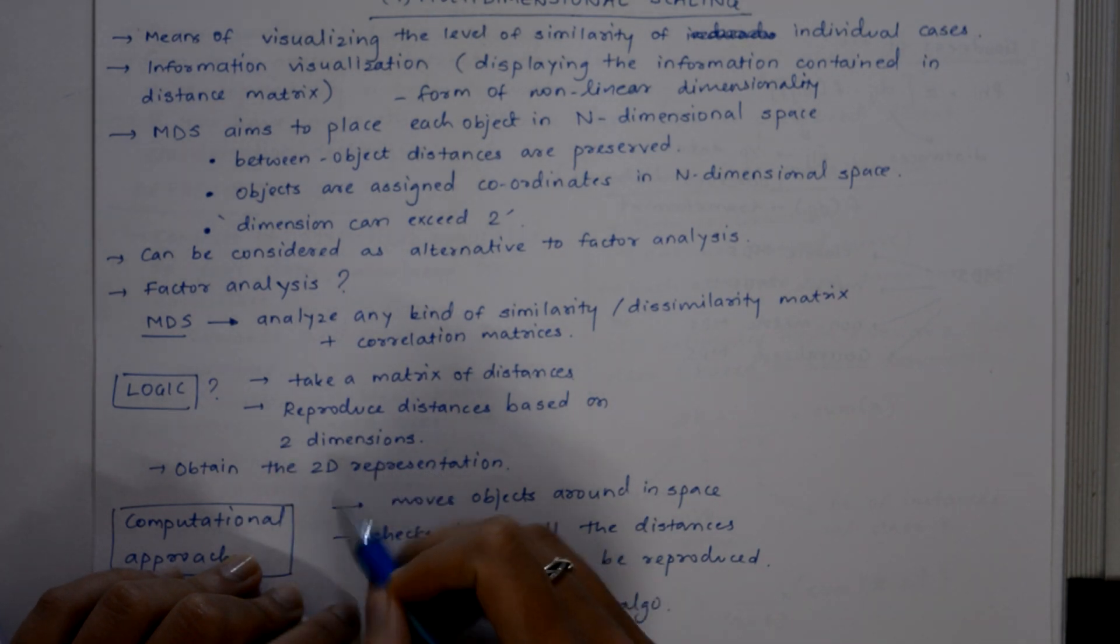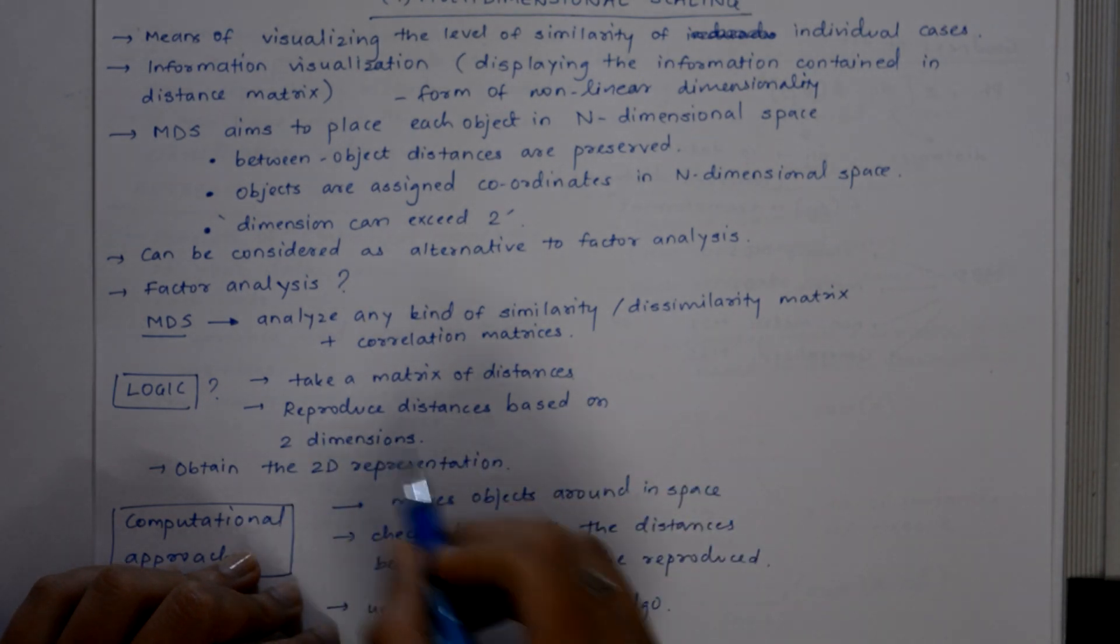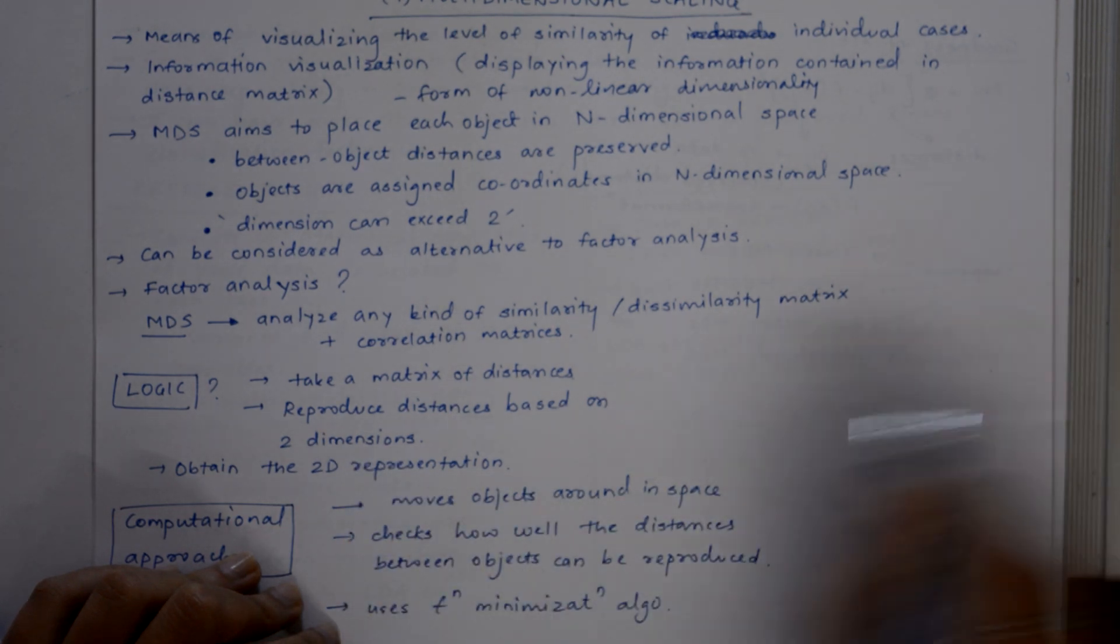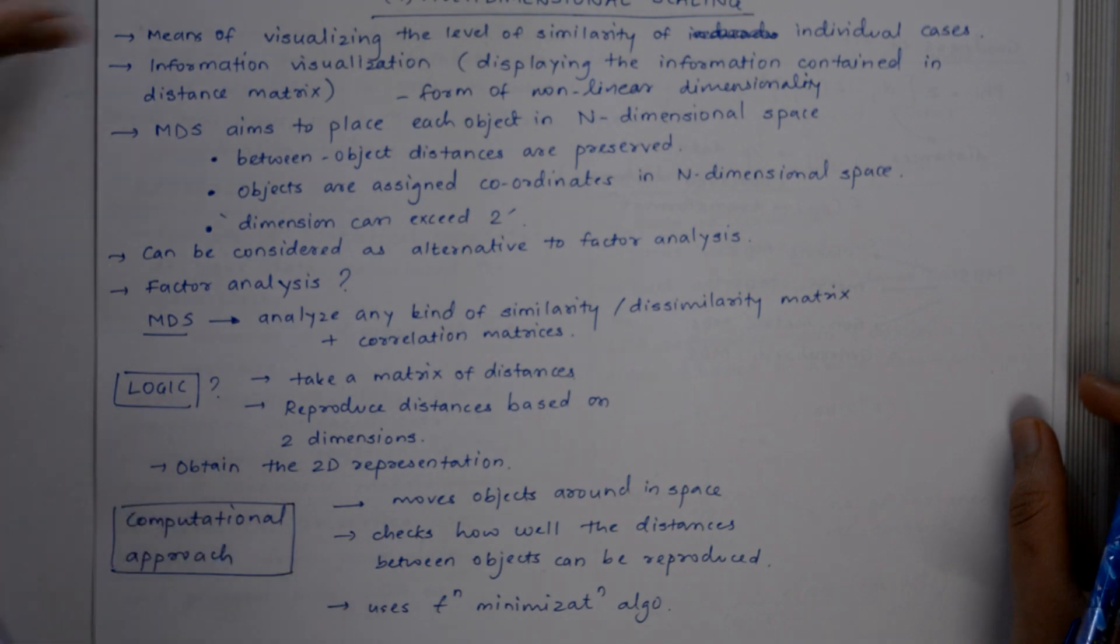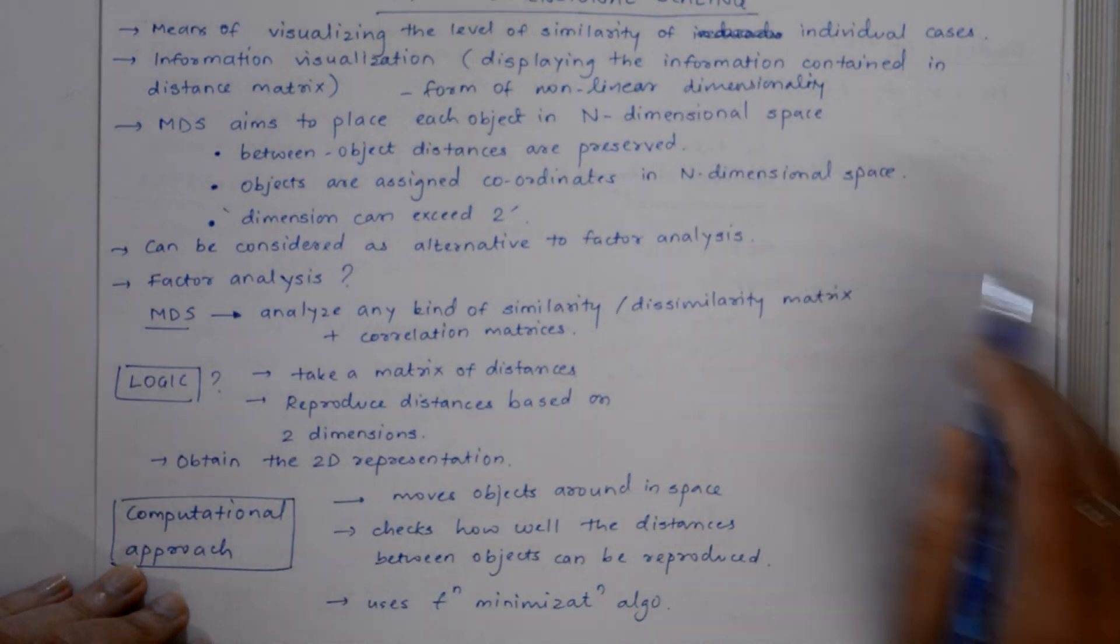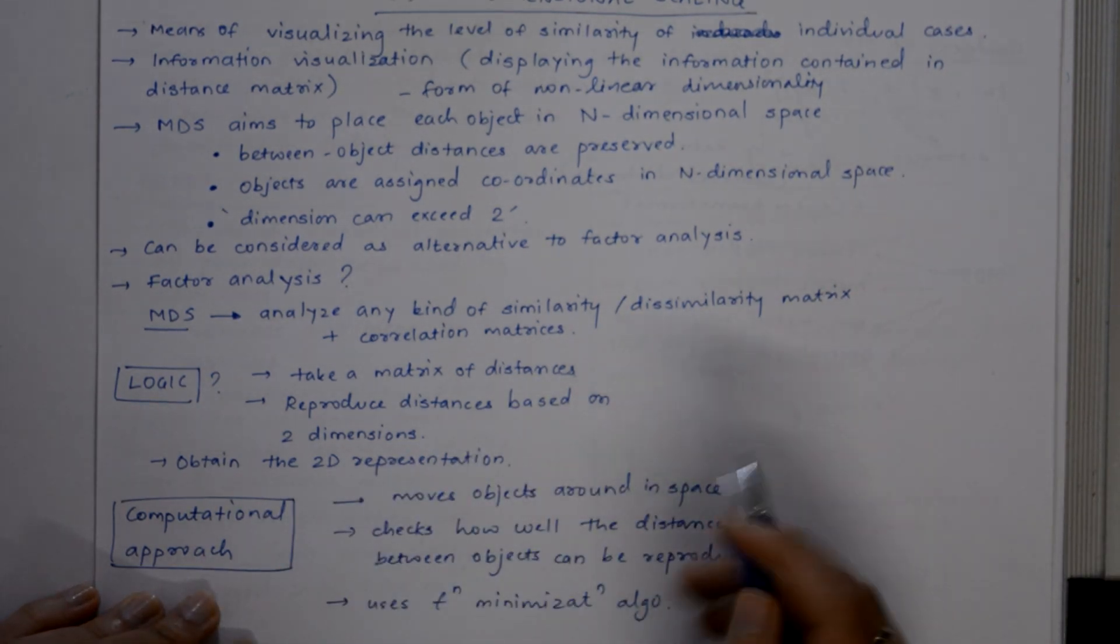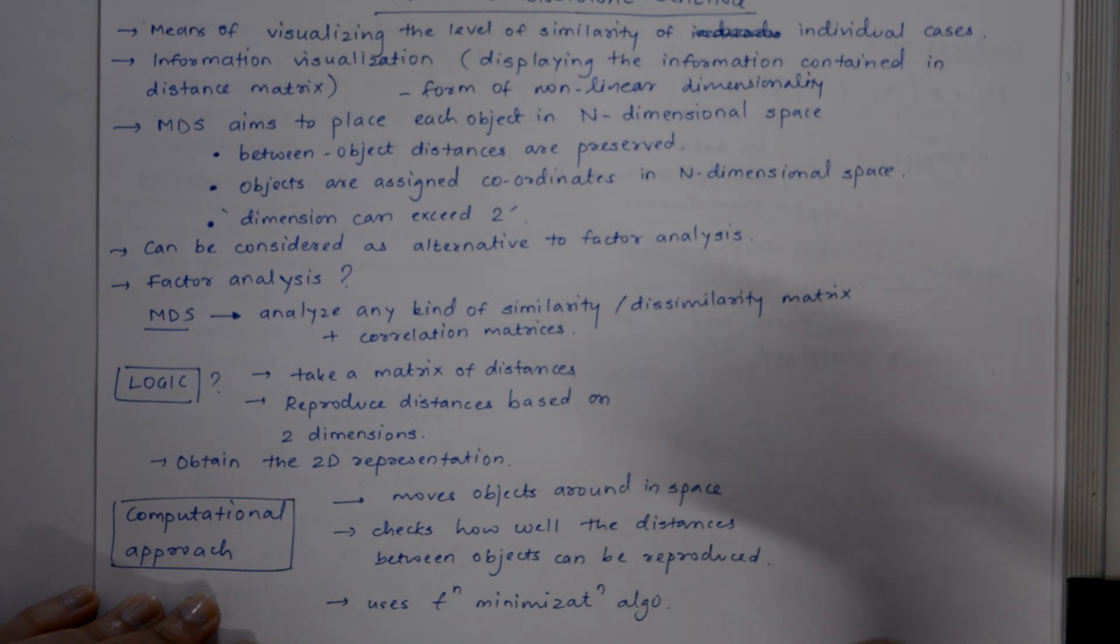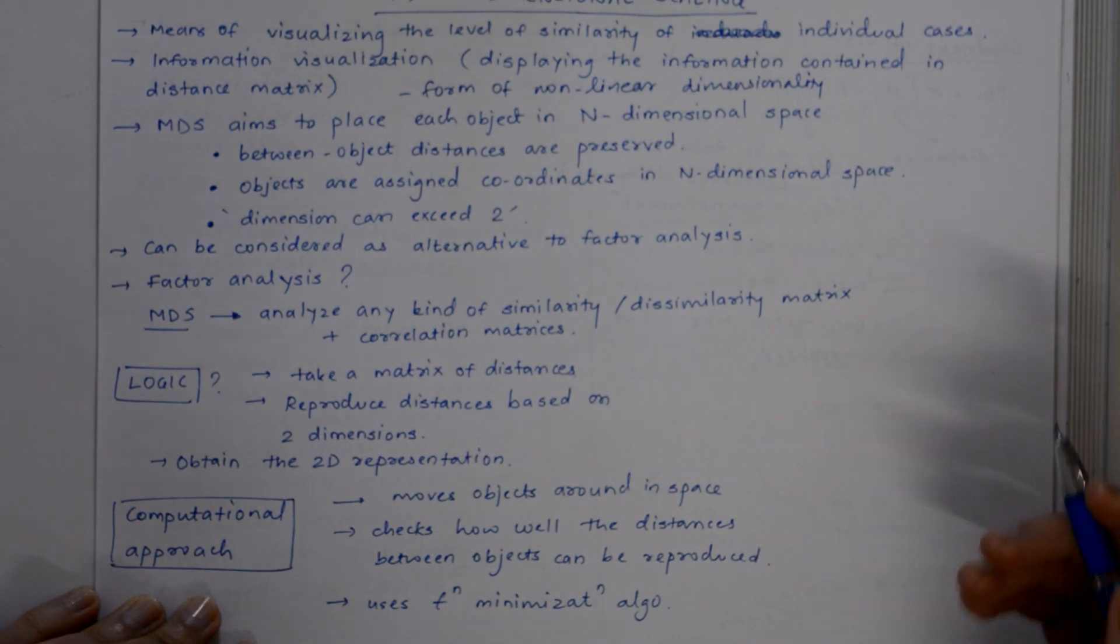As a result of MDS analysis, we would most likely obtain a 2D representation. We would basically obtain a two-dimensional map. In general, MDS attempts to arrange these objects in a space with a particular number of dimensions so as to reproduce the observed distances.